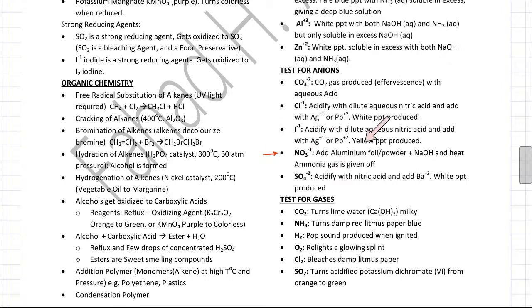The test for nitrate ions: if you add aluminium foil or powder plus heat—he was adding hot NaOH—ammonia gas is given off. So aluminium is going to give off ammonia gas if there is a presence of nitrate ions.